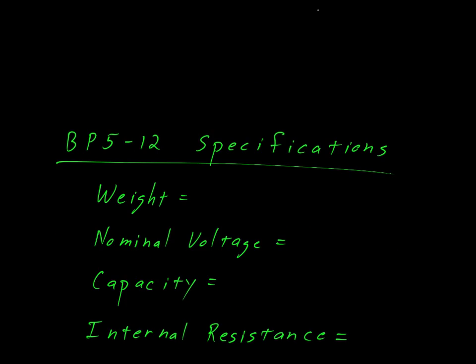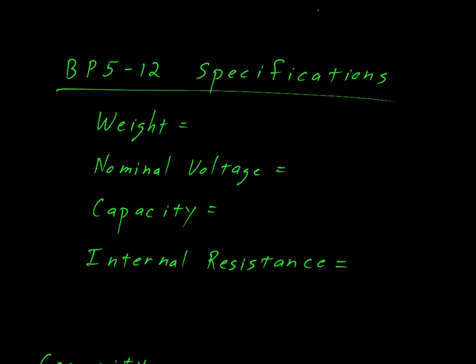For our discussion, we're going to assume a particular battery. In this case, we're going to talk about the lead acid PB5-12 battery. This is also equivalent to an NP5-12 battery. It has a weight of about 4 pounds, which is equal to 1,800 grams.